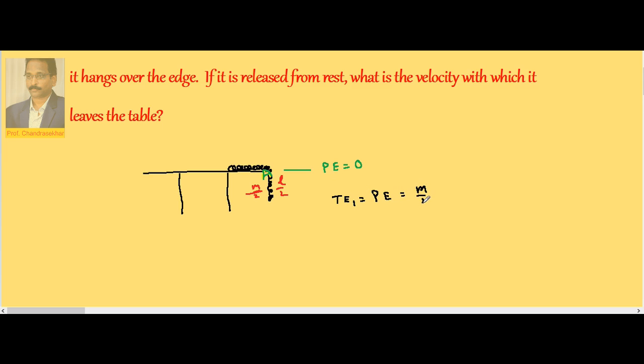Whenever there is a mass distribution, we are interested in center of mass. The total is l by 2, so center of mass distance from this point becomes l by 4, but it is with minus. Minus mgl by 8.